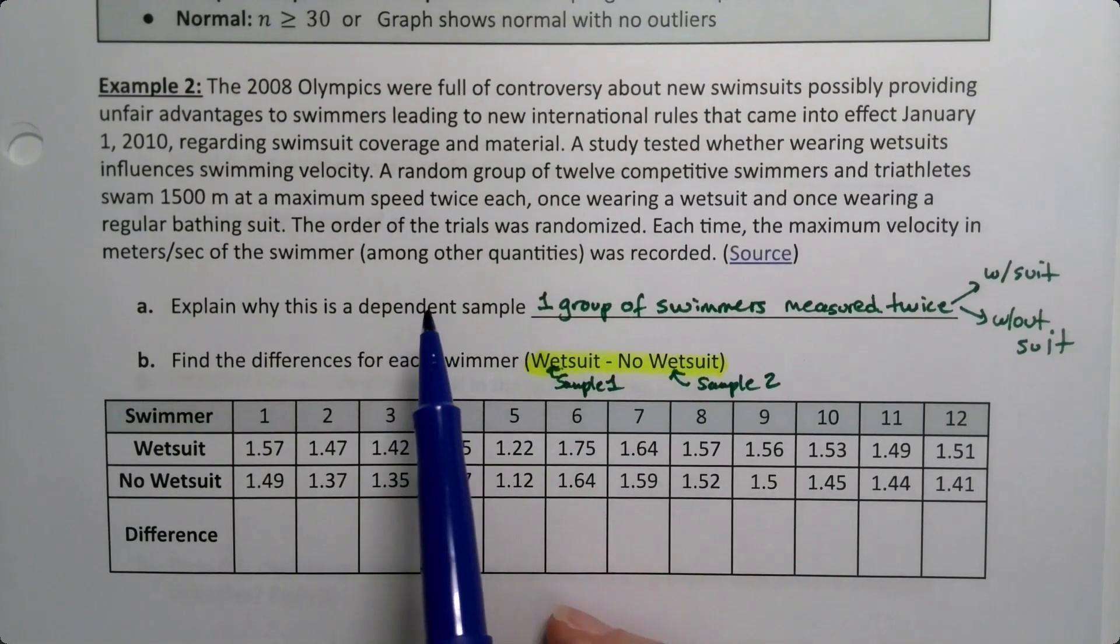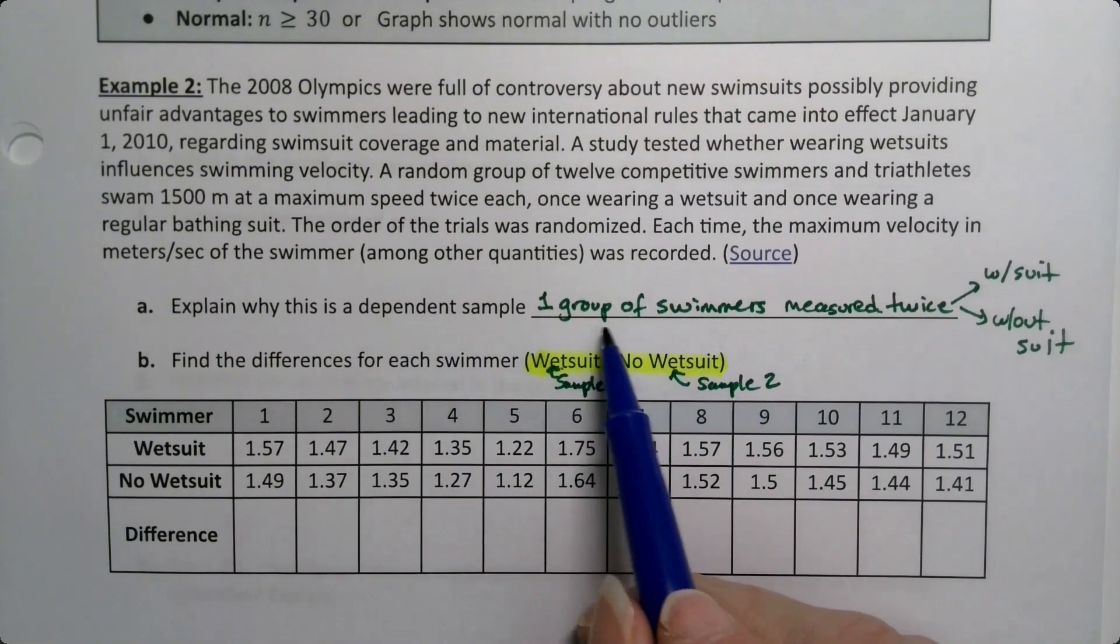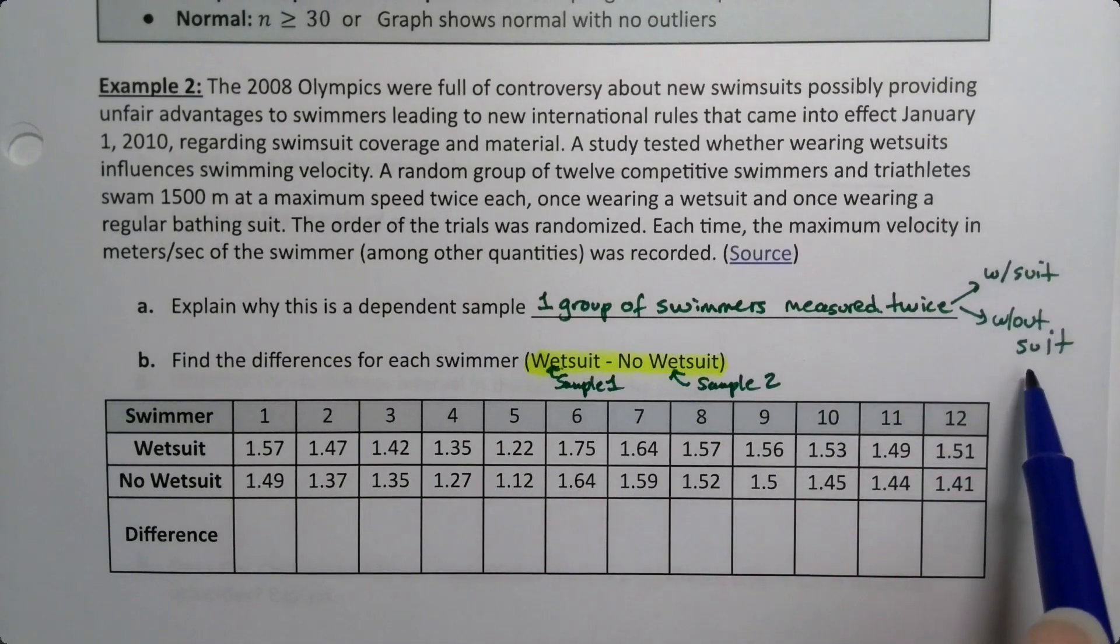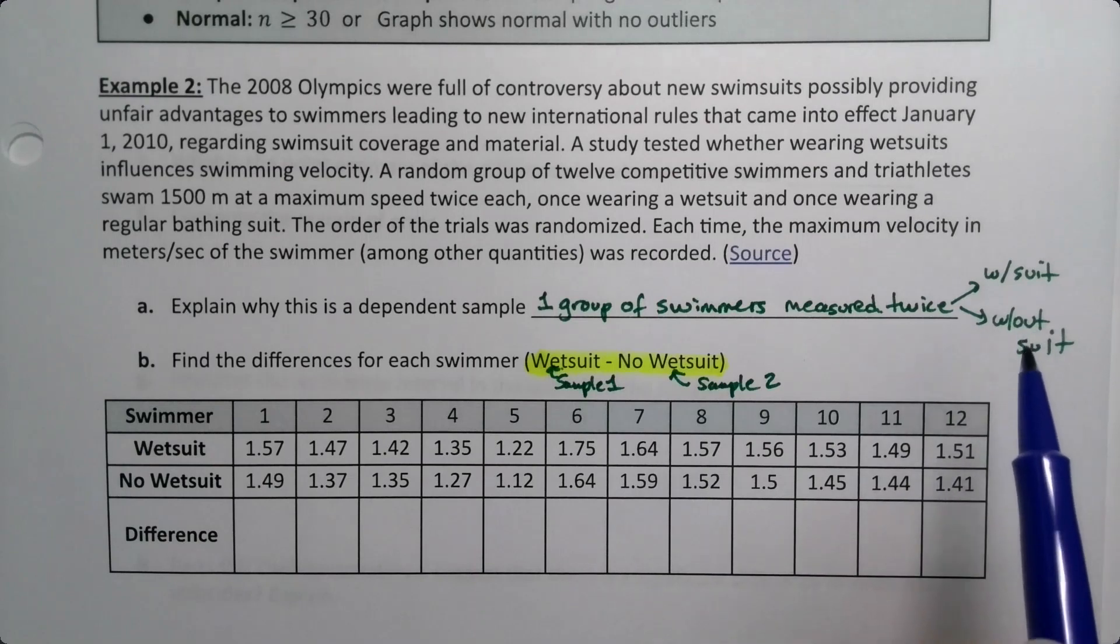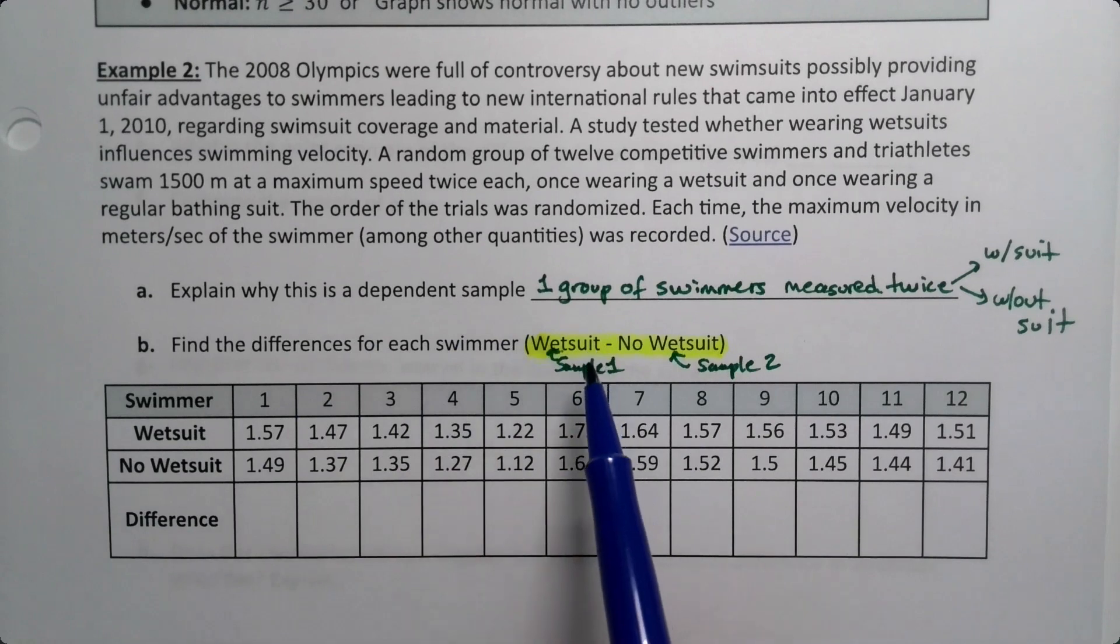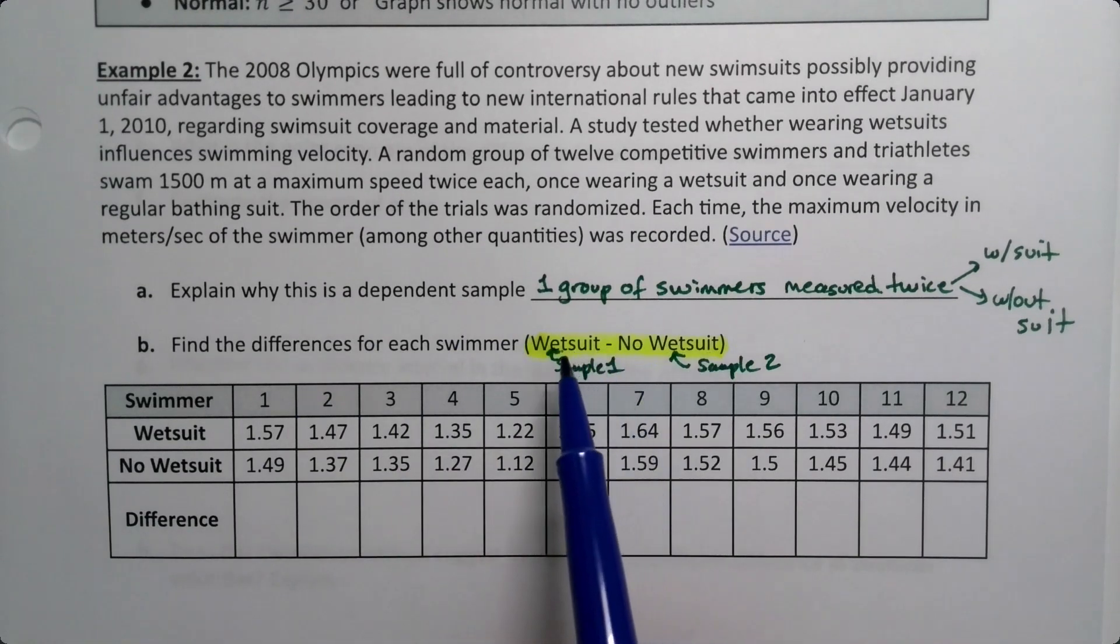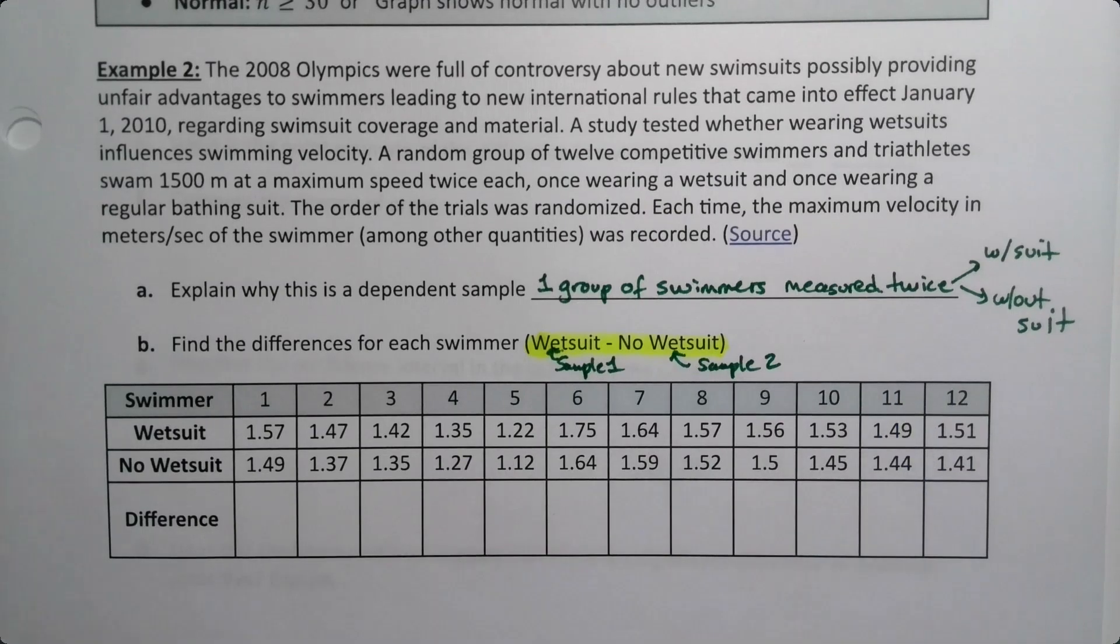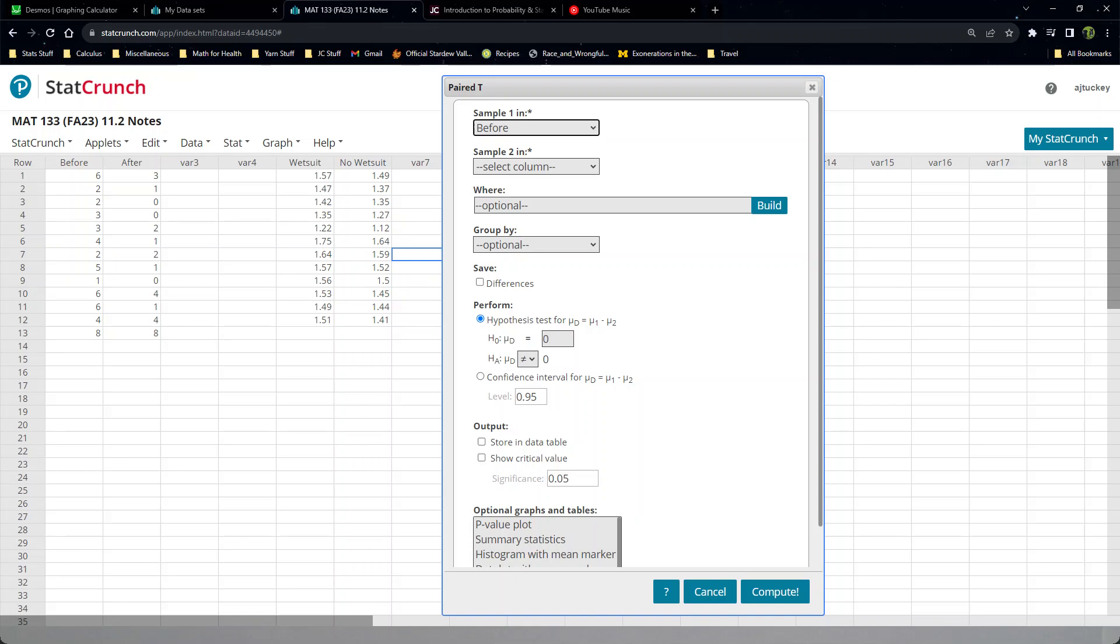This is a dependent sample with one group of swimmers that's measured twice, with the wetsuit and without the wetsuit. That's classic matched pairs. I tell you that I want wetsuit minus no wetsuit so that you'll know which is sample one for our purposes. We're going to have StatCrunch help us with this, so Stat, T Stats, Paired.